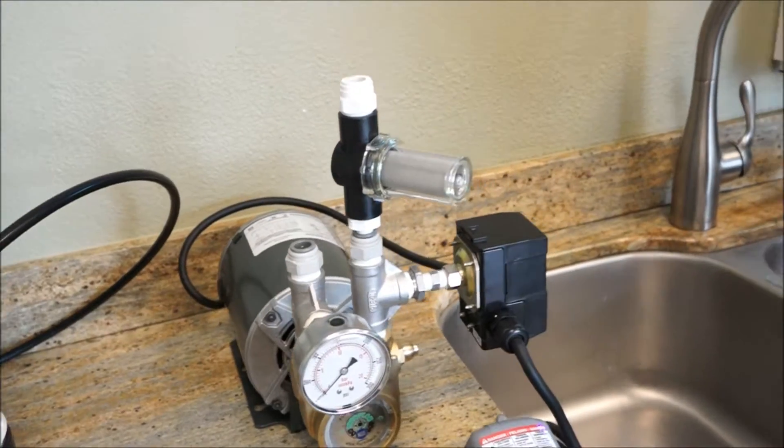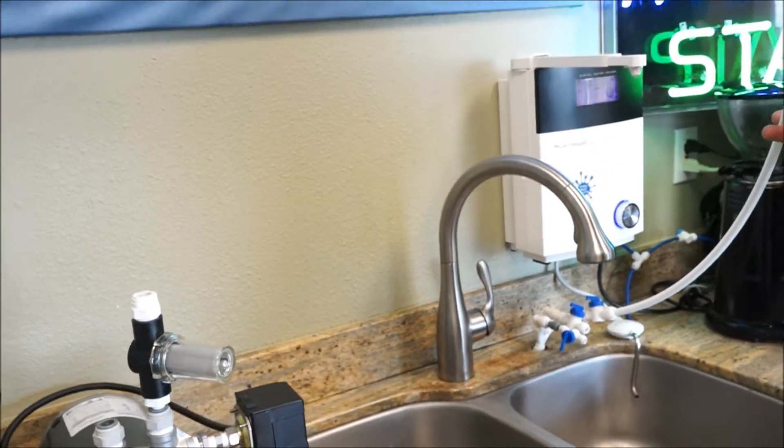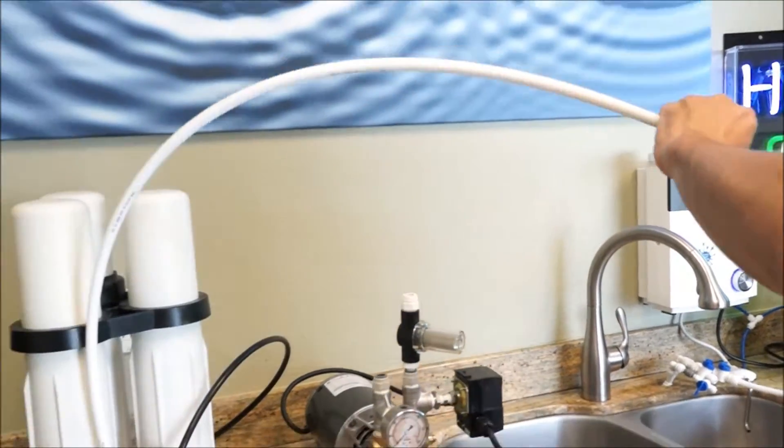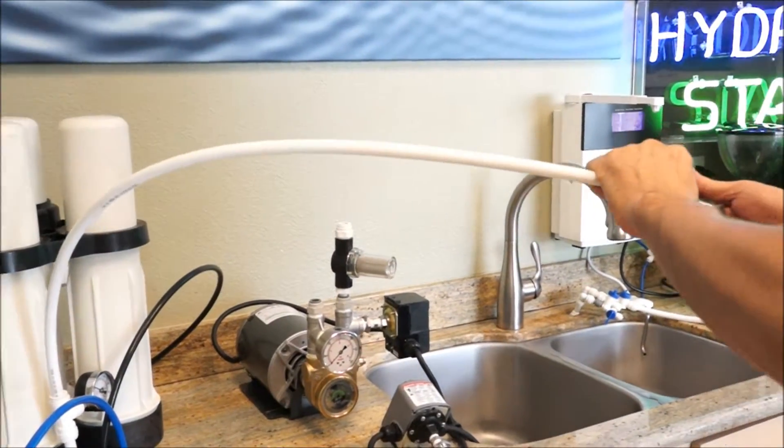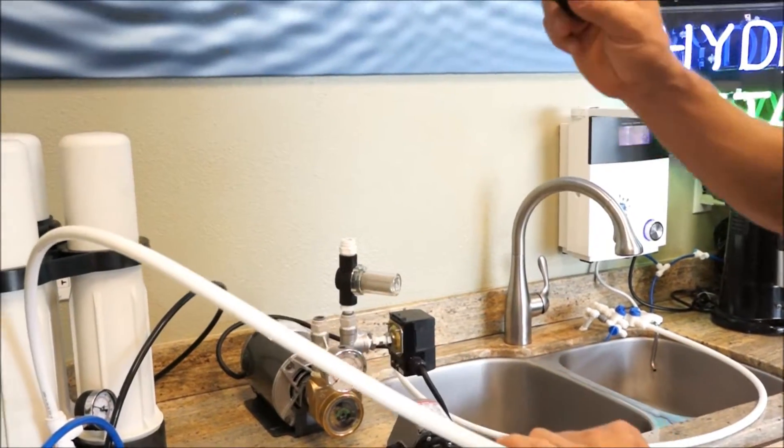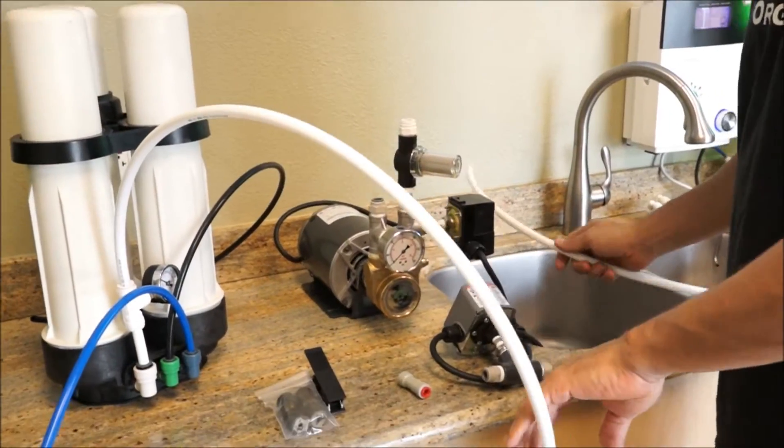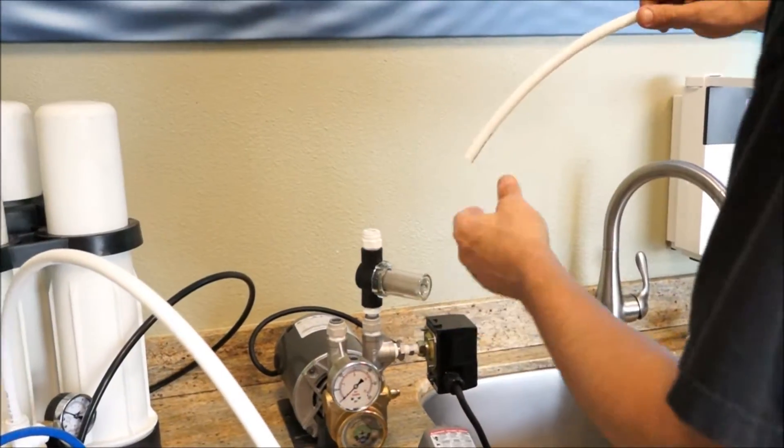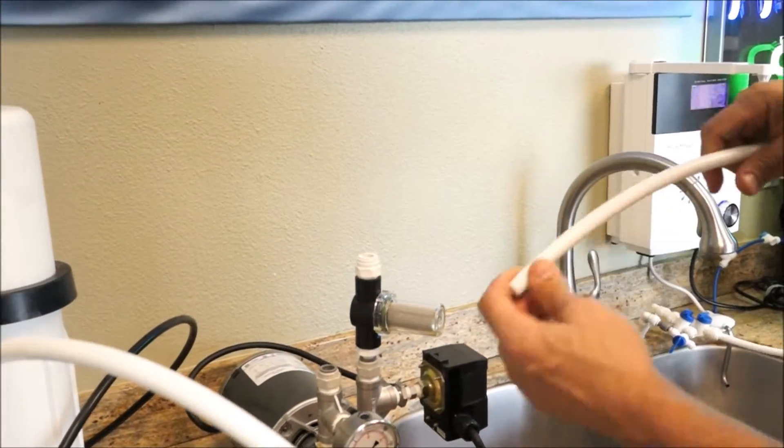Then you're going to want to take the line, the half inch line that came with your evolution that's feeding your evolution and you're going to want to cut it using either some tubing snips that we do sell or a very sharp pair of scissors or knife on a cutting board. You want to make a nice square clean cut.